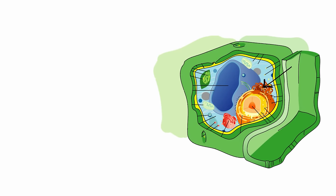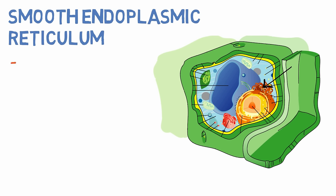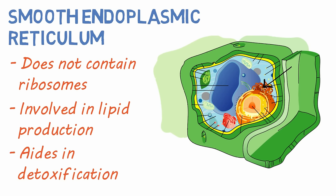The smooth endoplasmic reticulum, or smooth ER, does not contain ribosomes and is involved in the production of lipids and aids in detoxification.